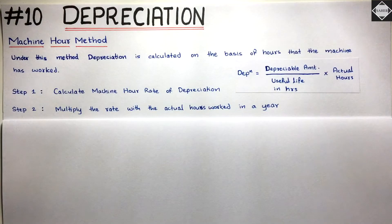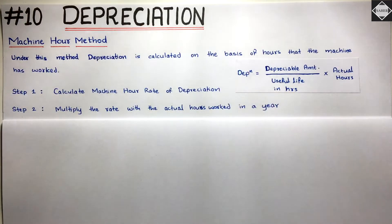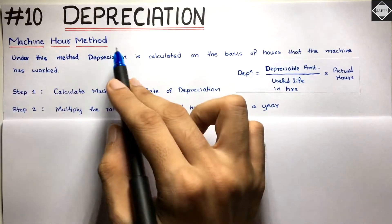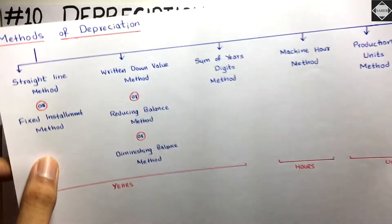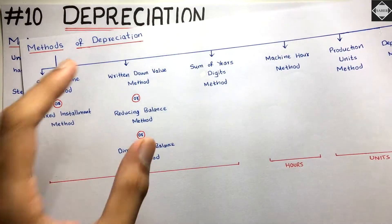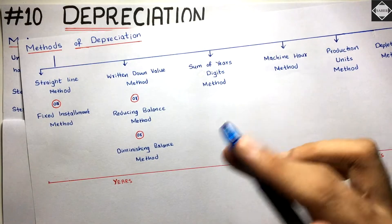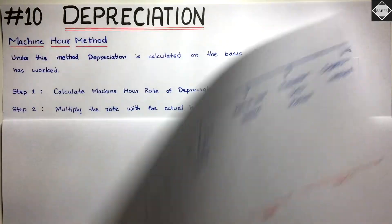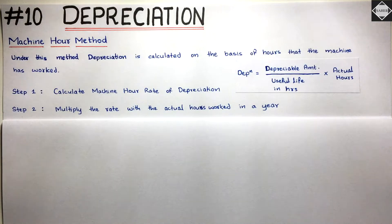Hi everyone, welcome back to Sahab Academy. Today in this 10th video of the Depreciation chapter, we are going to start our next method of depreciation — the Machine Hour Method. In the previous nine videos, we covered SLM, WDV, and the Sum of Years Digits method with problems. Now here, we are going to not just understand the concept but also solve problems. We'll cover one ICAI illustration and one practical example.